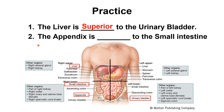Number two: the appendix is blank to the small intestine. The appendix hangs off the large intestine, and the small intestine is in the middle. So you could say the appendix is lateral to the small intestine.